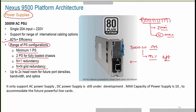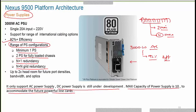The Nexus 9500 currently supports only AC power supply; DC power supply is still under development. The maximum capacity of 10 power supply slots is provisioned to accommodate future more powerful line cards. If Cisco introduces more powerful line cards in the future, the system will need additional power, and you can use up to 10 power supplies. To start with a fully loaded chassis, a minimum of two power supplies is required.